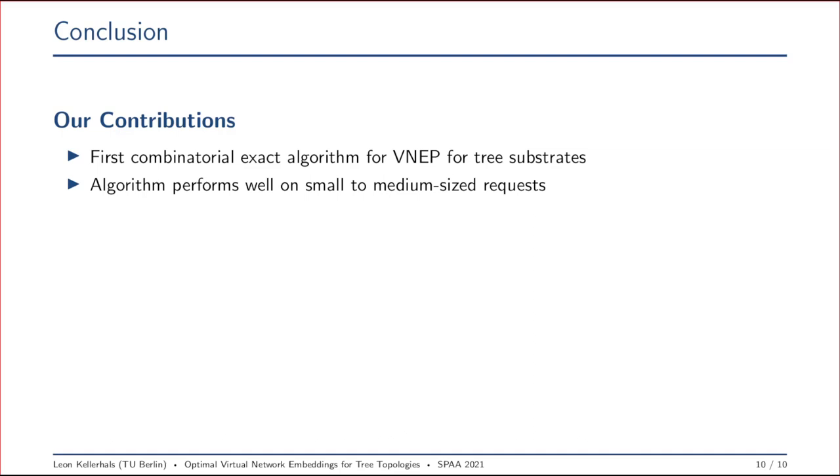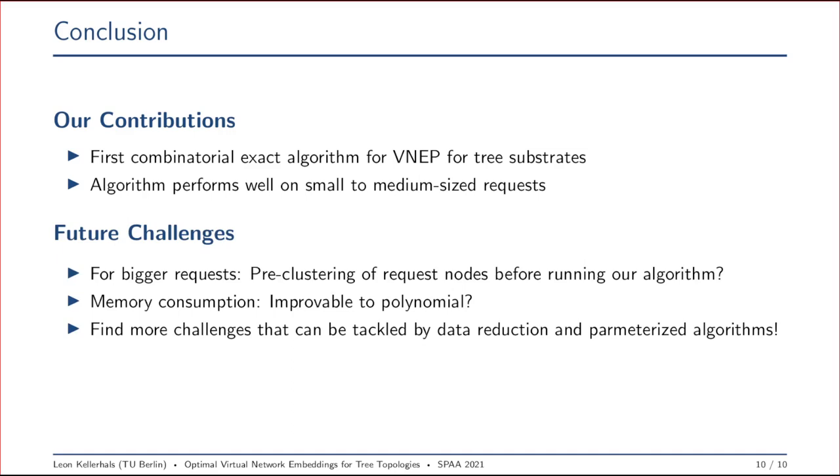This directly leads into one of our first questions: What do we do with bigger requests? One option that we could do is a pre-clustering of the request nodes. What this does is we join certain request nodes and treat them as a single node for our algorithm. Of course, with this we would lose the optimality possibly, but still it might yield a very efficient algorithm for bigger requests.